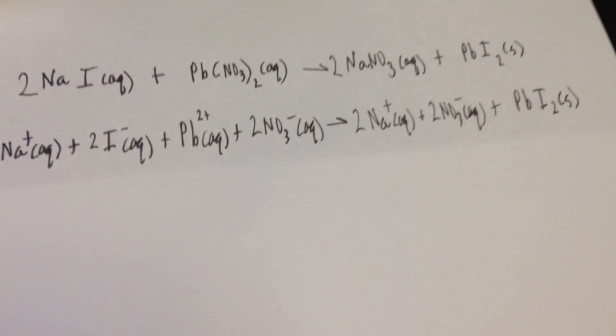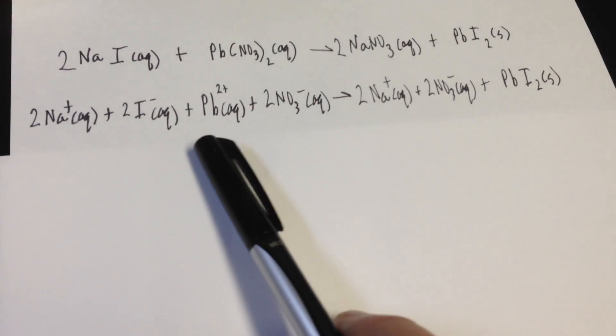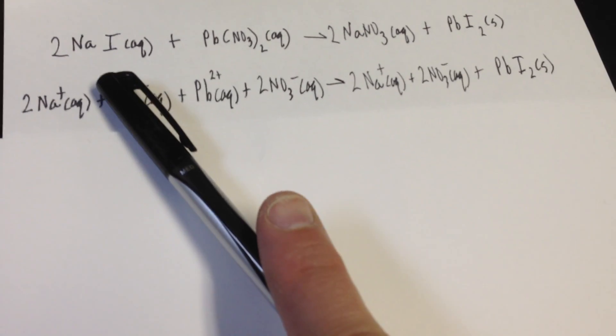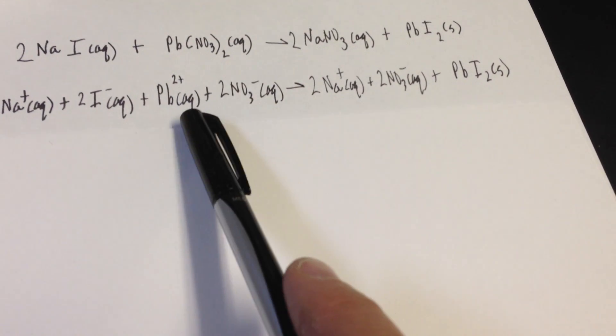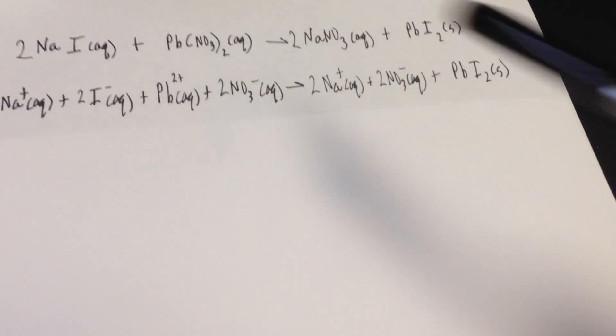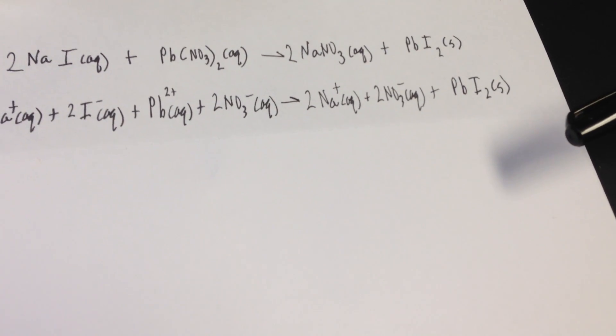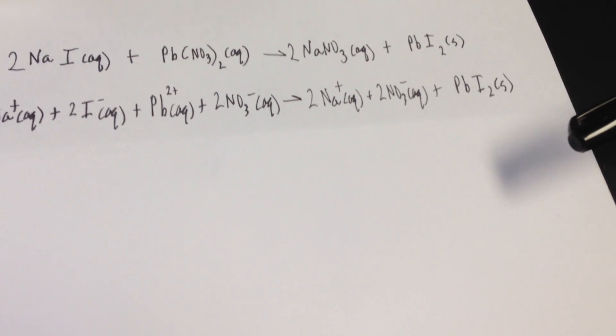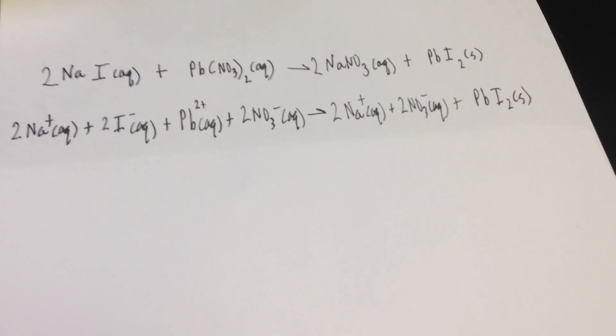Now, what I've also done for you is I wrote the ionic reaction, where we have two sodium ions and two iodide ions dissociated. A lead ion and two nitrates dissociated. That's what AQ means again. Those ions dissociate in water. The sodium and nitrate stay dissociated. They are soluble in water, and the PbI2 sticks together. It is insoluble in water, so it's a solid.